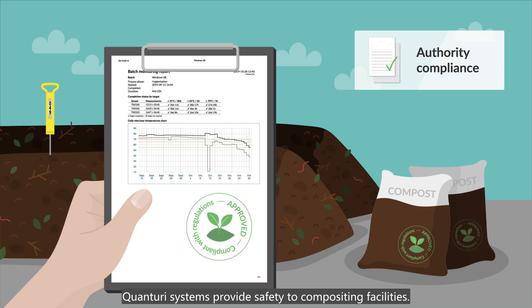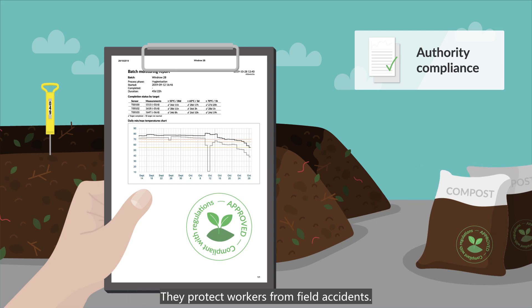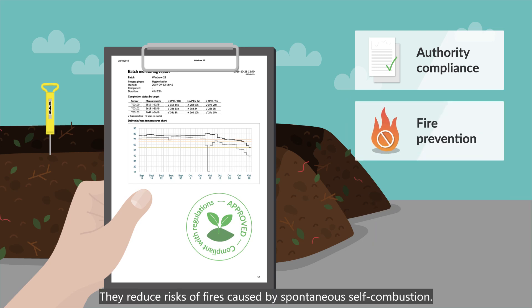Quantory systems provide safety to composting facilities. They protect workers from field accidents. They reduce risks of fires caused by spontaneous self-combustion.